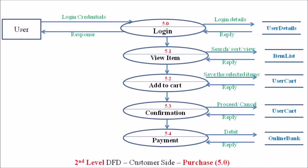Once a customer has selected some commodities, those commodities are added to the shopping cart and the confirmation process deals with billing all of these selected commodities. The selected commodities' bills are prepared in the confirmation area, and this process ensures the final list of items selected and prepares the bill for those particular products.